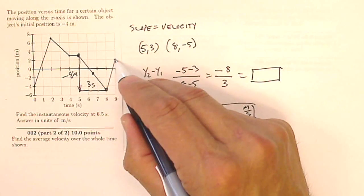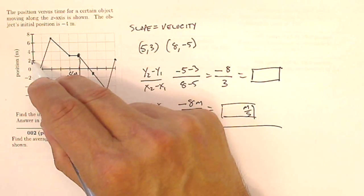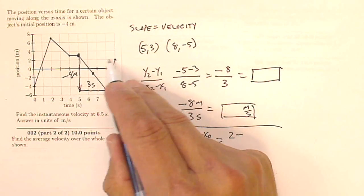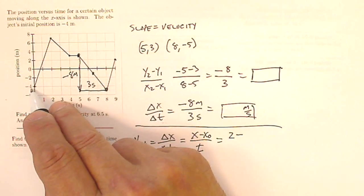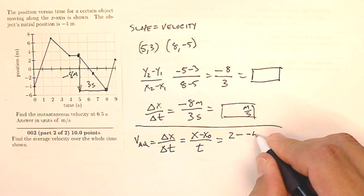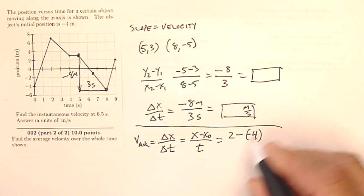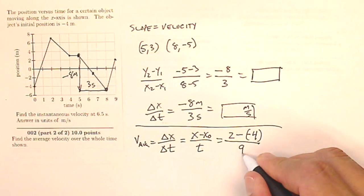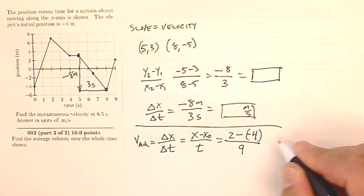Well, my final position is right here, and my final position is positive two. So that's going to be two, minus my initial position here is negative four. So two minus minus four. And the amount of time that passed was a total of nine seconds. So two minus minus four is two plus four, so I'm going to get six over nine.